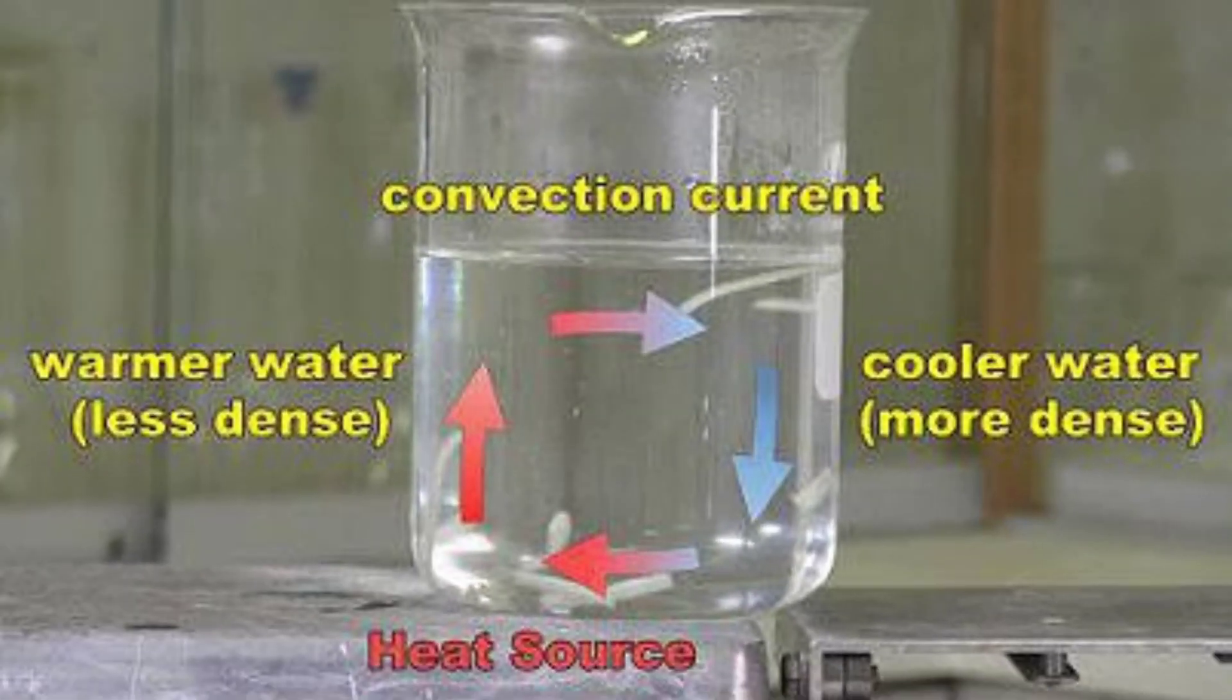Thus the cyclic movement of particles starts and ends up heating the whole water of the pan. So this cyclic movement in fluids comes because of heating, and this process is known as convection.